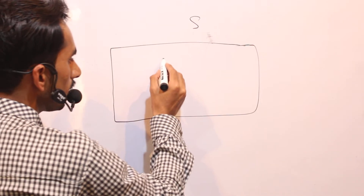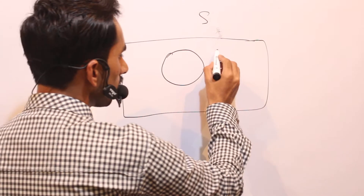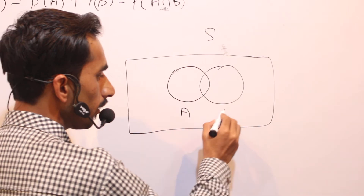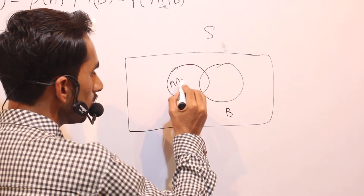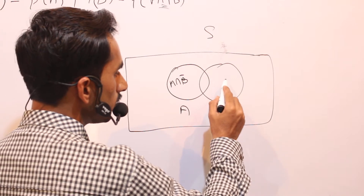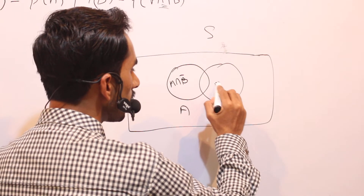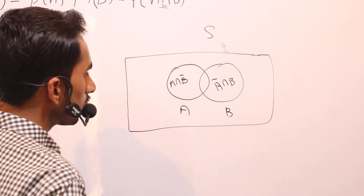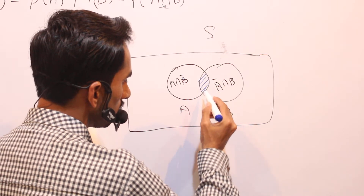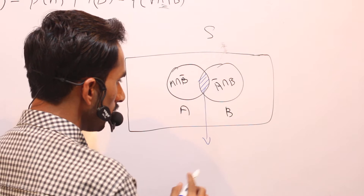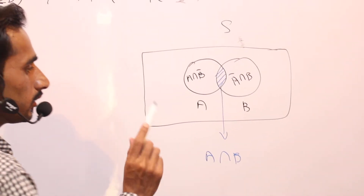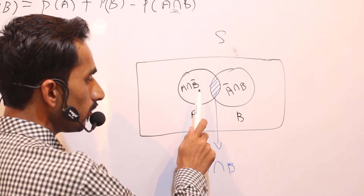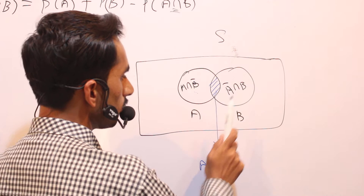This is our sample space. If we take event A and event B, the left-only portion of A can be written as A intersection B-bar, the right-only portion of B can be written as A-bar intersection B, and the overlapping middle portion can be written as A intersection B. So A union B is composed of three portions.